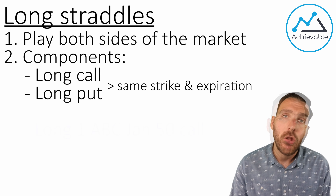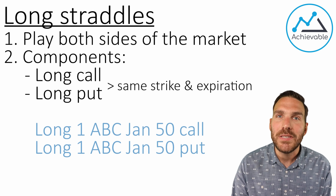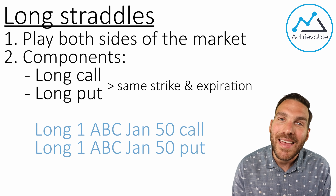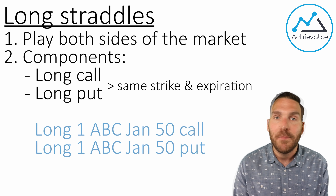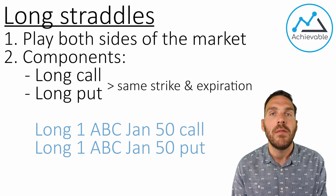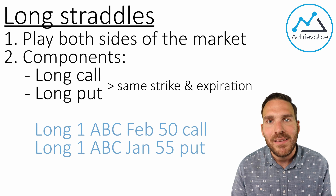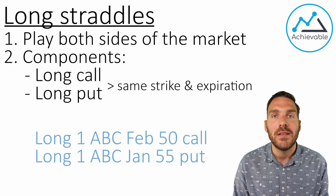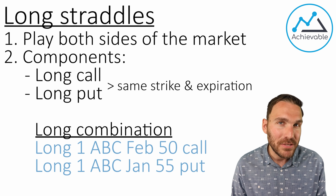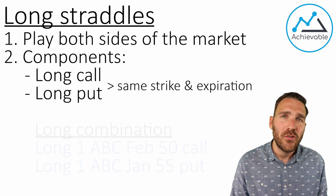A long straddle is a long call and a long put with the same strike price and same expiration. For example, long one ABC Jan 50 call and long one ABC Jan 50 put — this is a long ABC straddle. Just identifying this strategy is an important test topic. If we see a difference between the strike prices, the expirations, or possibly both, we now have what we would call a long combination. A combination is kind of like a messed up straddle.